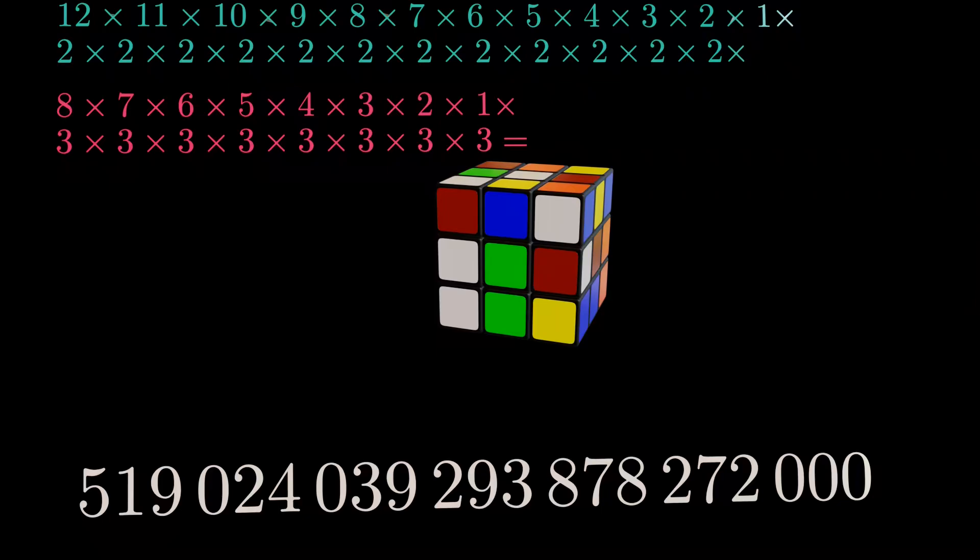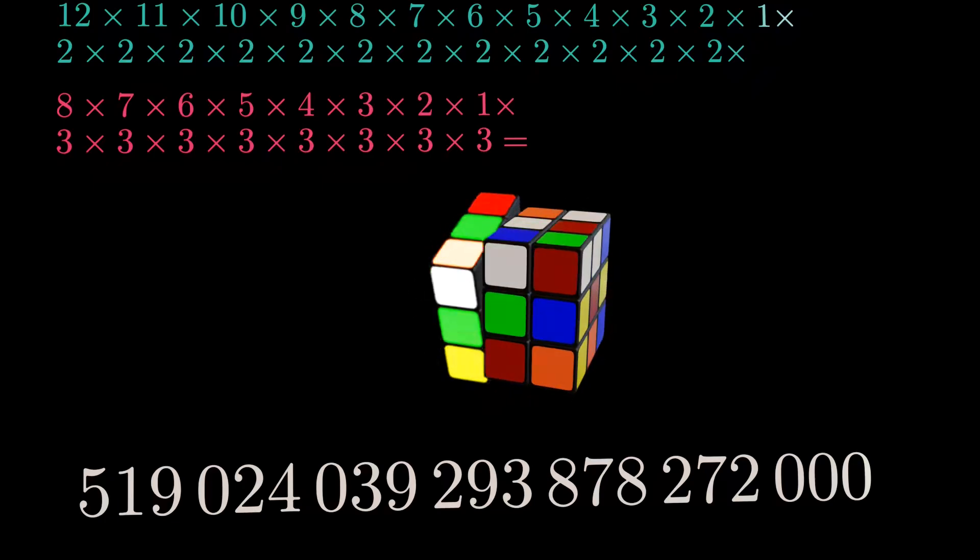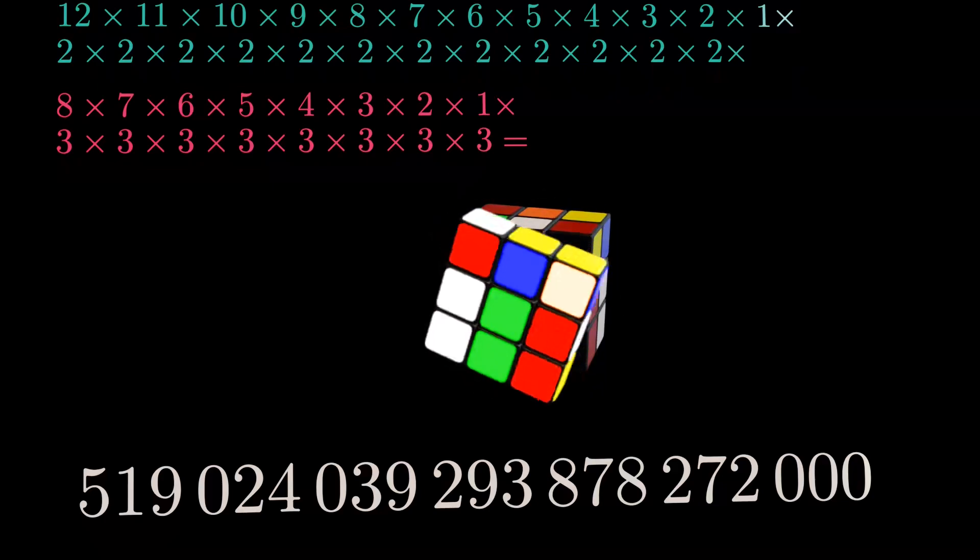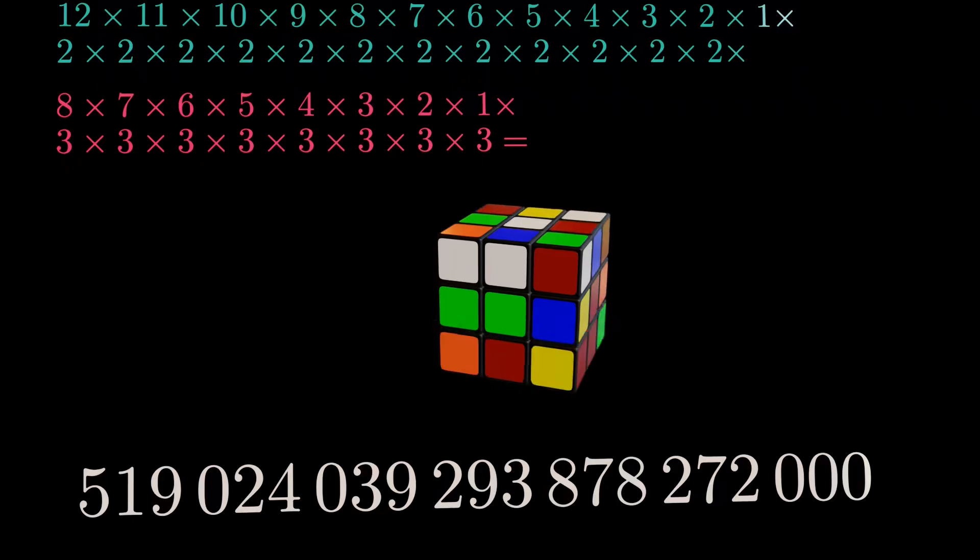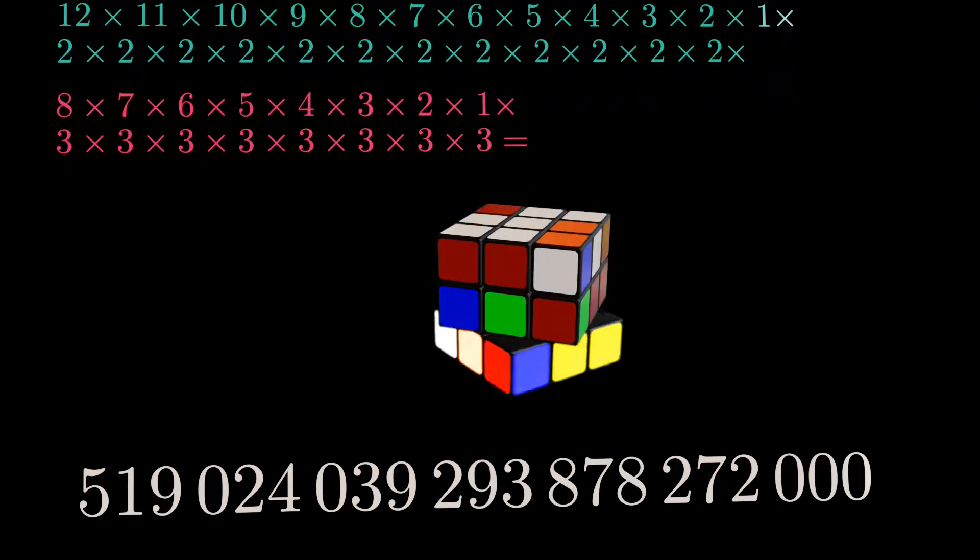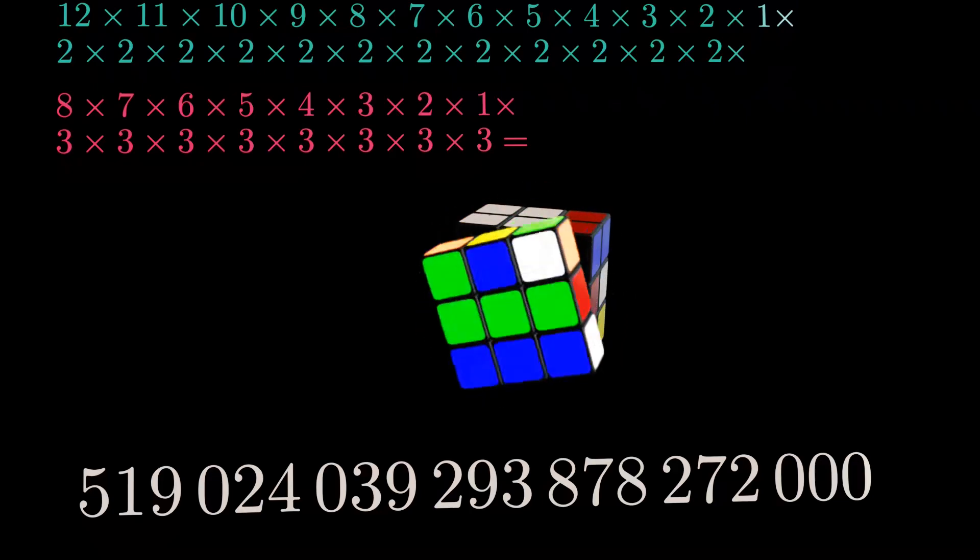These scrambled states are often called screwdriver configurations, since they are created by taking the cube apart and randomly reassembling it. But here's the catch. Most of these configurations are impossible to solve. If you take a random screwdriver configuration, chances are you won't be able to twist the cube back to its solved state, no matter how many moves you try. In fact, only one out of every 12 of these randomly assembled cubes is actually a valid configuration, one that can be solved purely through legal phase rotations.